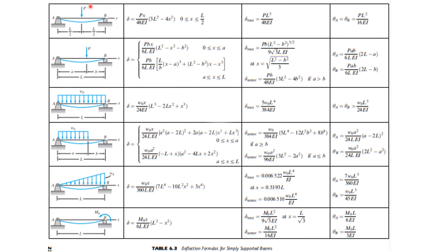We have another table for simply supported beams. I will not go over this in detail because it can be derived by double integration. What is important is the maximum deflection at the center: PL³ over 48EI — you must be familiar with this. Also, theta A equals theta B by symmetry: PL² over 16EI. For other cases in this table, you can always refer to it whenever needed in a problem.